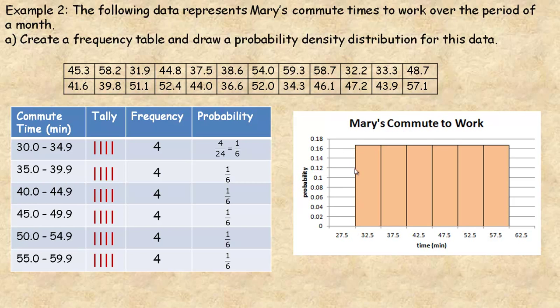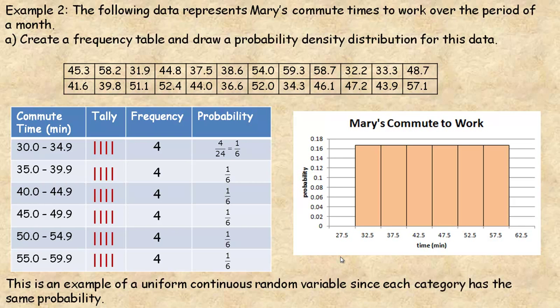This is what the probability density distribution would look like. 1 sixth is 1.6 repeating. So that's this height right here, 1.67 approximately. And so that's what the bars would look like. The middle of each one, from 30 to 35 would be 32.5. That's the middle. So basically that's 30, 35, 40, 45, 50, etc. This is an example of a uniform continuous random variable, since each of the categories has exactly the same probabilities. That's why it's called uniform. They're all the same.